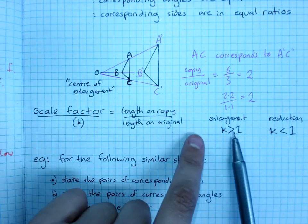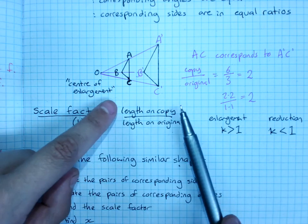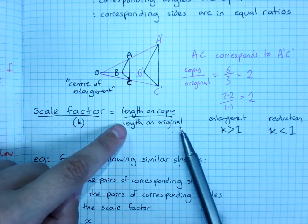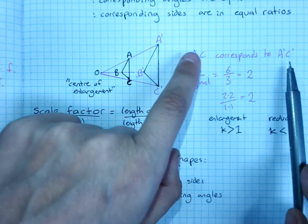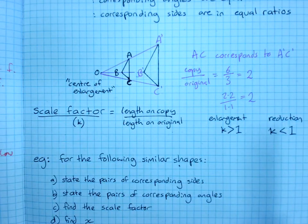So you get your enlargement factor or your reduction factor by doing a length on the copy divided by a matching length on the original, a pair of corresponding sides divided out.